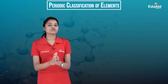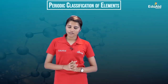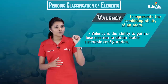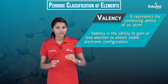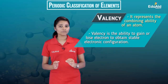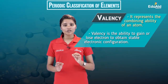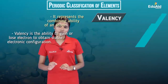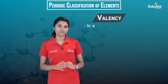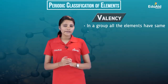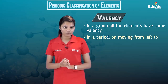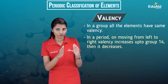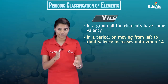Let us go through the different trends in the modern periodic table. Starting with valency — valency represents the combining ability of an atom; it is the ability of an atom to gain or lose electrons in order to achieve a stable electronic configuration similar to that of a noble gas. In a group, all elements have the same valency. However, in a period, moving from left to right, the valency increases till Group 14, and after that it starts decreasing.